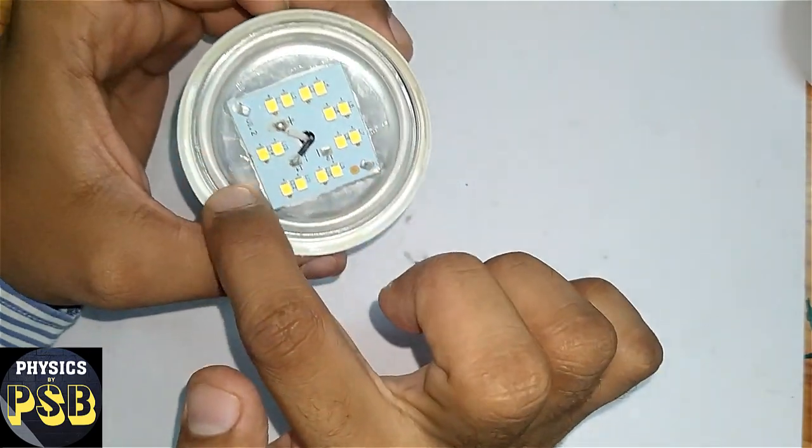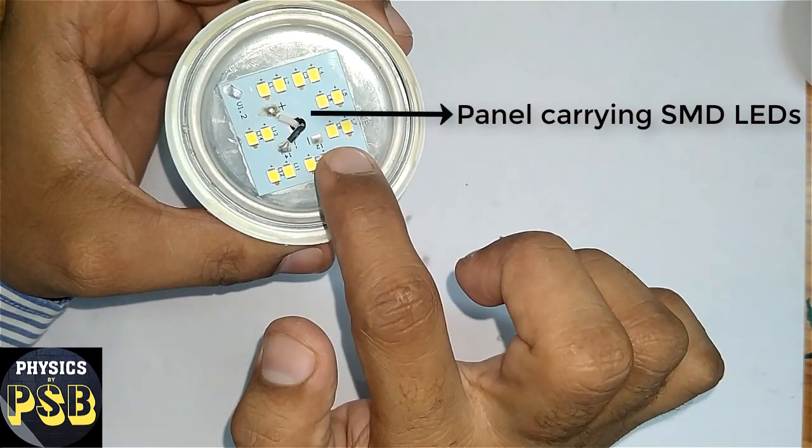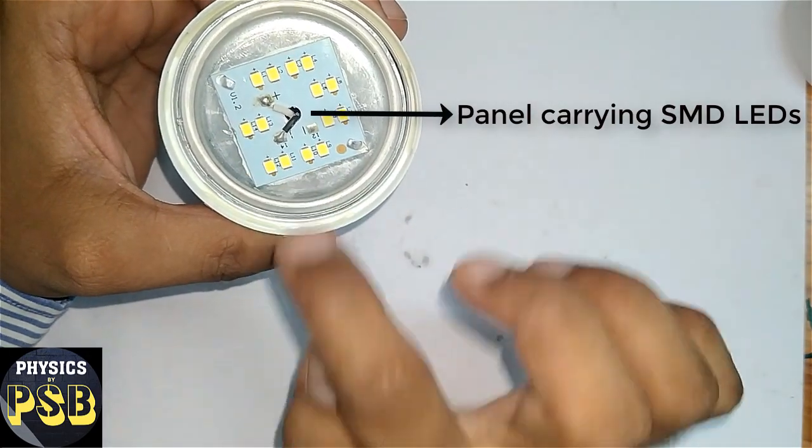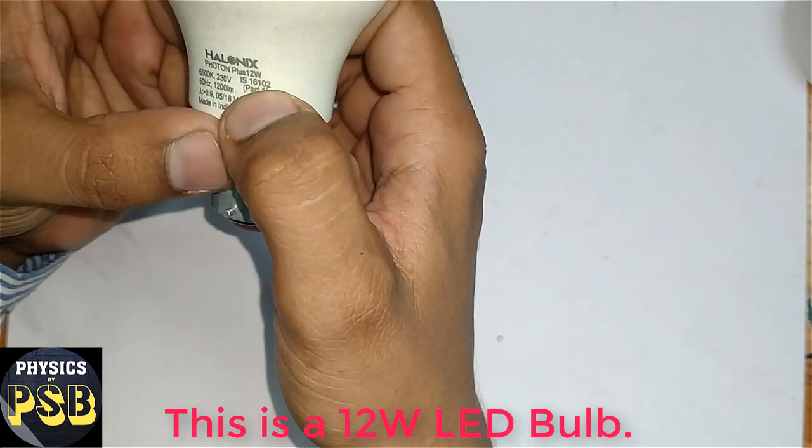Then this portion—this is called the heat sink. It is made of aluminum. At the center, what you see is nothing but the panel which carries all LEDs.